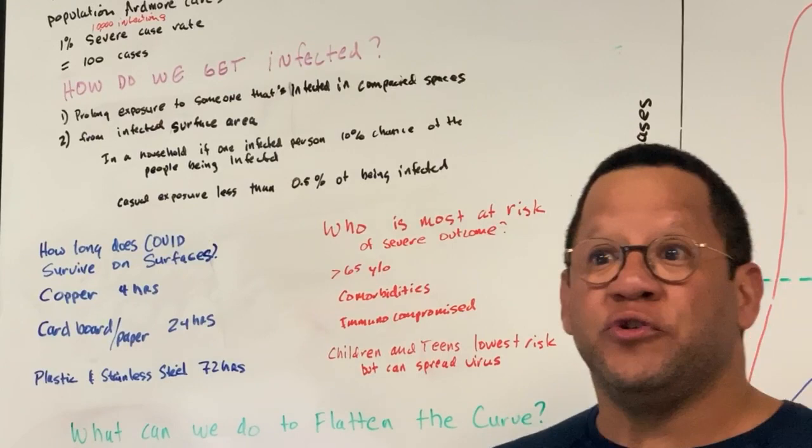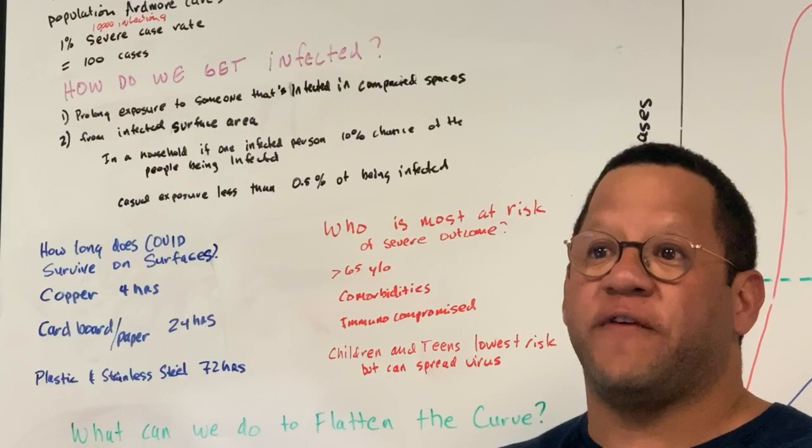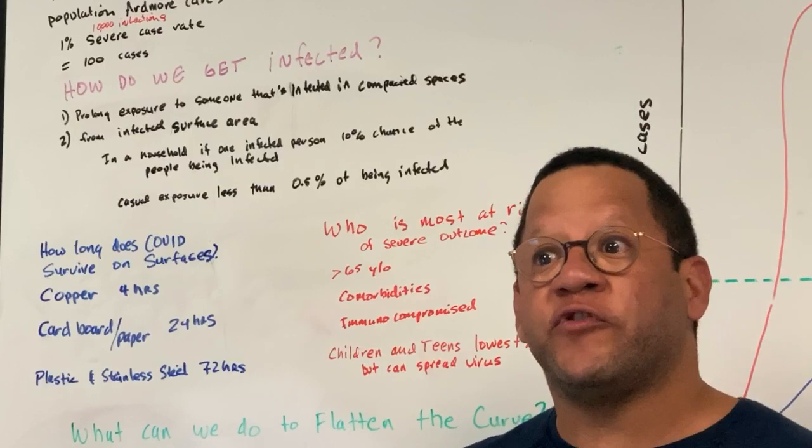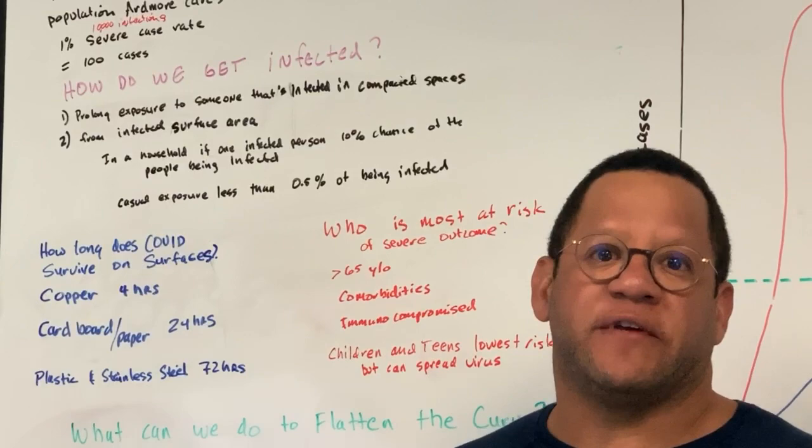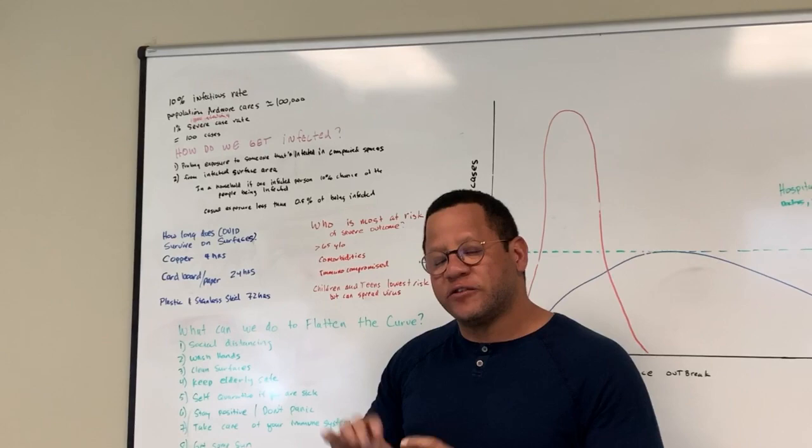So to kind of put that in numbers to you in your household, if someone comes into your household and they're infected, let's say you come home and you're infected in your household, you have a 10% chance of infecting someone else in your household. If you're just walking by somebody casually in a non-compact area, it's like 0.5% of getting infected. These are numbers that are coming from the World Health Organization from studies they did in China. So there's a lot of numbers and things that we do know.